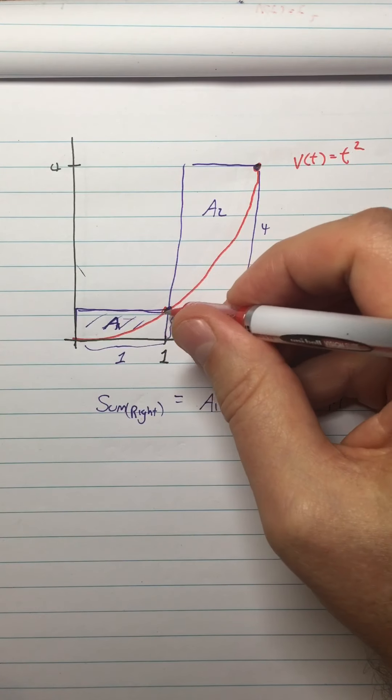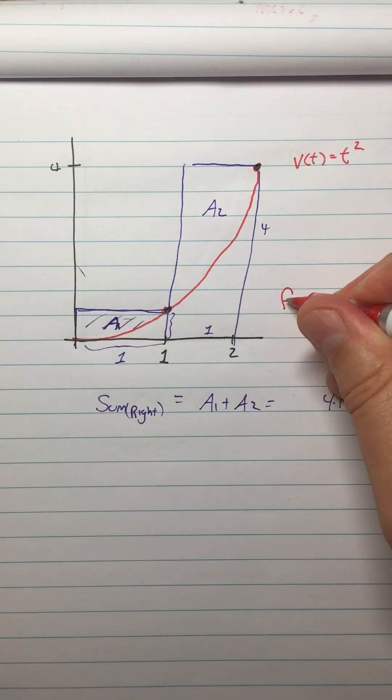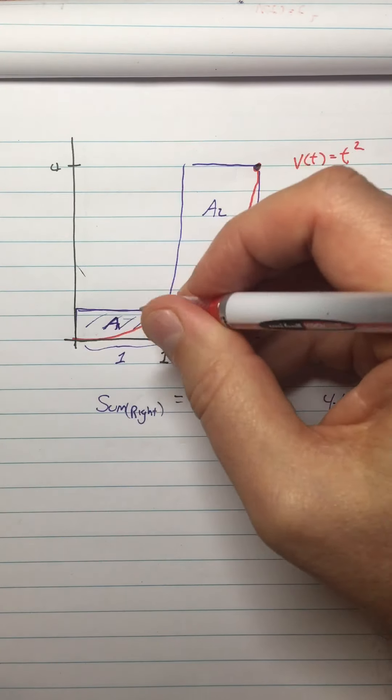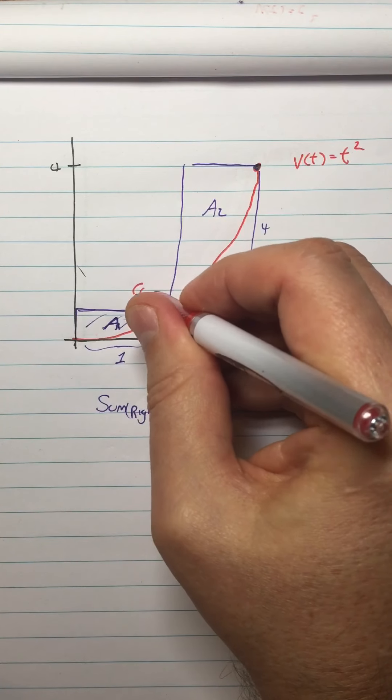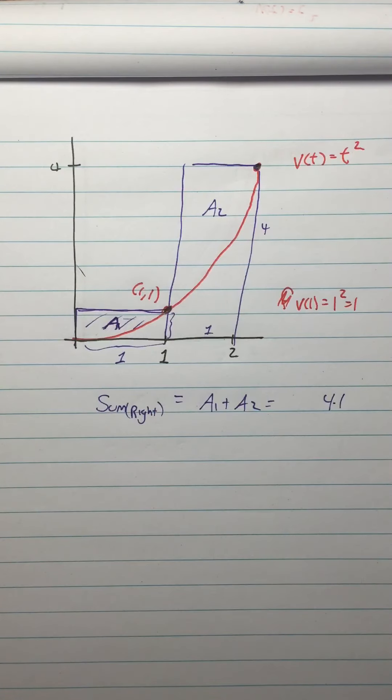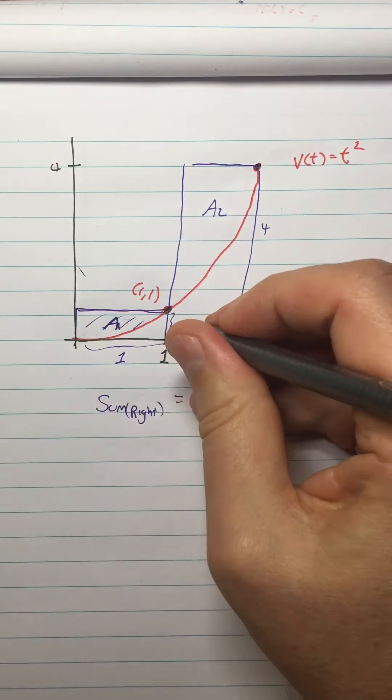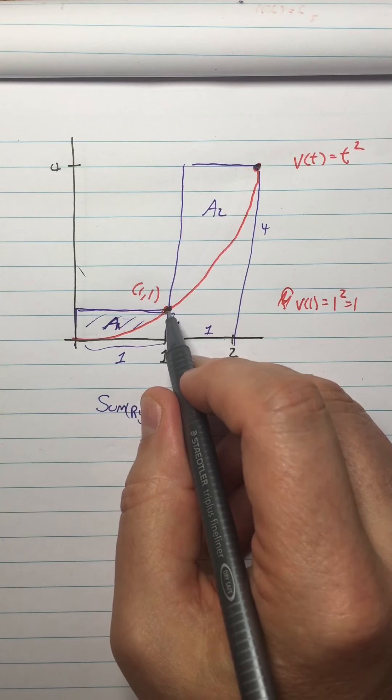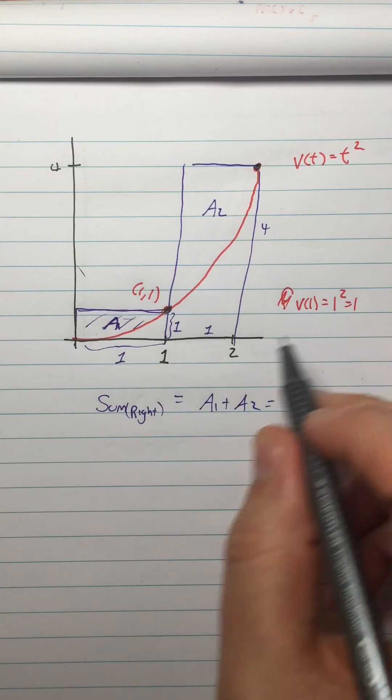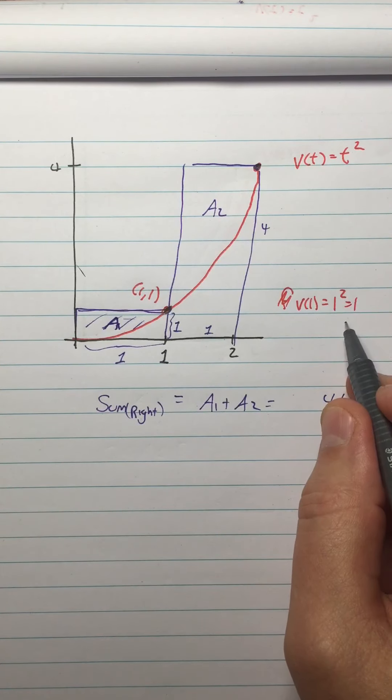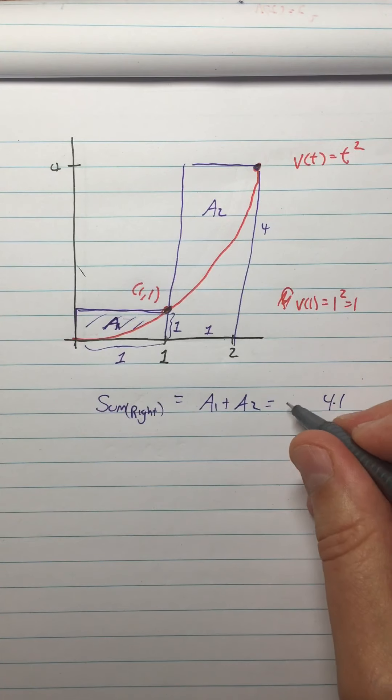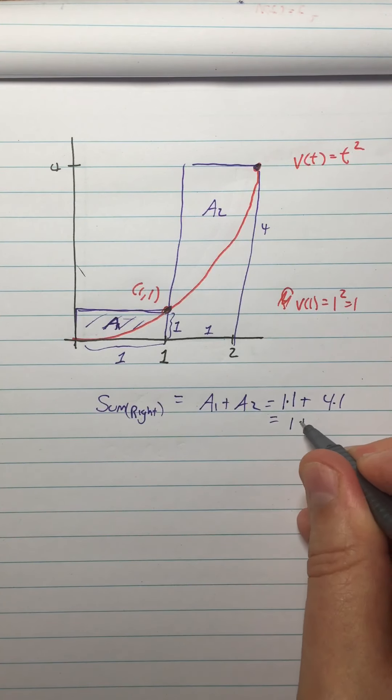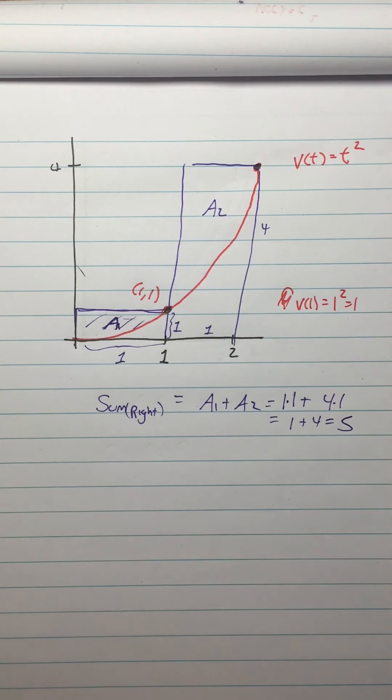And I know that v of 1 equals 1 squared, which is 1. So now I know that the coordinates of this point right here are 1, 1. This is a little bit trivial, but we'll see that as it gets more complicated, it's going to be worth thinking about the fact that I knew this height of this rectangle was 1 because I plugged in the x value to the function. Now I know this height is 1. So that's what the first rectangle A1 is, 1 times 1. So that's 1 plus 4 is 5.